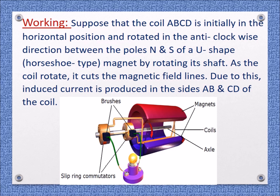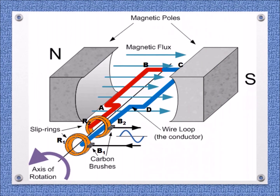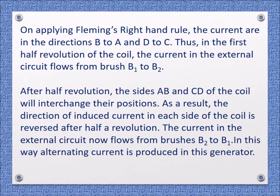Due to this, induced current is produced in the sides AB and CD of the coil. On applying Fleming's right-hand rule, the current flows in the directions AB and DC. Thus, in the first half revolution of the coil, the current in the external circuit flows from brush B1 to B2.